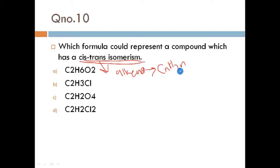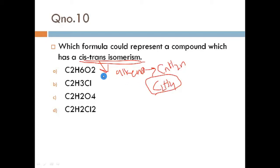The formula for alkenes is CnH2n. Looking at all the compounds, they have C2, so with n=2 there should be 2×2=4 hydrogen atoms. Checking the first compound: two carbons but eight atoms attached — not an alkene. Moving to the next option with two carbons and four hydrogens — that fits the alkene formula CnH2n.